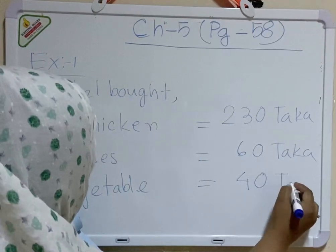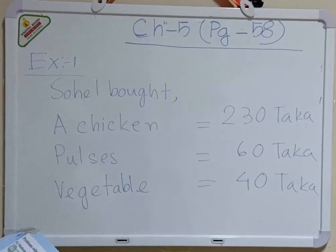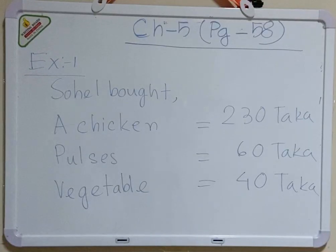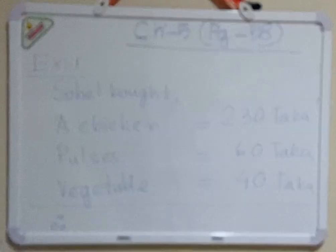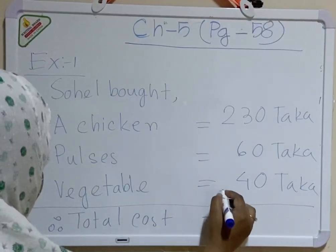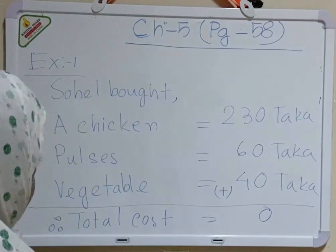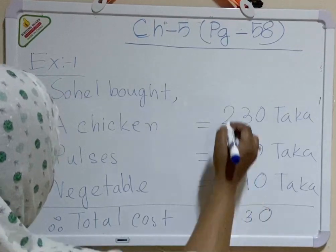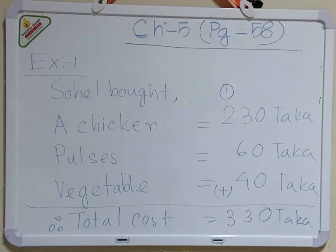And at the end, if they ask how much total money he spent or what is the total cost, then you will make an underline and write: therefore, total cost equals — you will do the addition because they are asking for the total. So 0 plus 0 is 0, 3 plus 6 is 9, 9 plus 4 is 13, 1 is carried over — that is what you are doing traditionally, step by step.